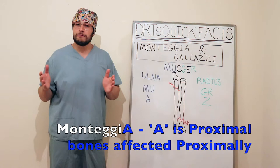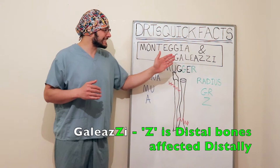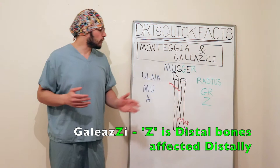Whereas the Z in Galeazzi is at the distal part of the alphabet, therefore the fracture is at the distal part of the radius — X, Y, Z. So remember: MAGA.